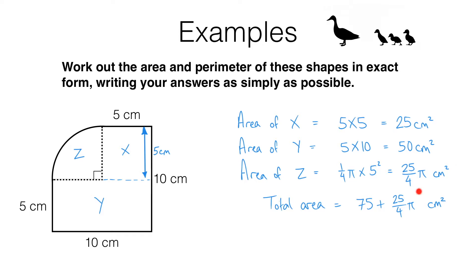I can't simplify this anymore. These are not like terms. 75 is just a number, it's not a multiple of pi, whereas this term here is a multiple of pi. So I'm going to keep it separate in the expression for the sum.